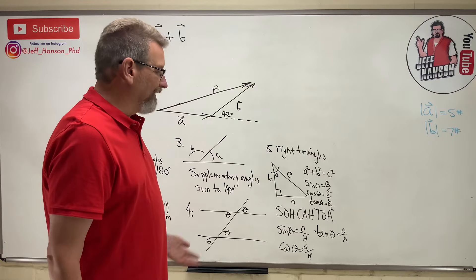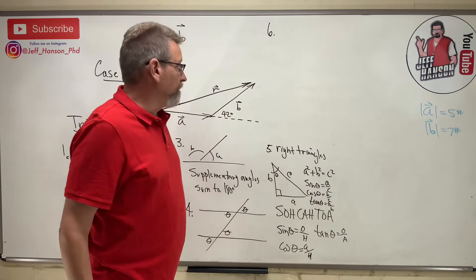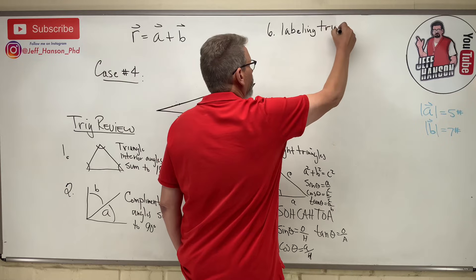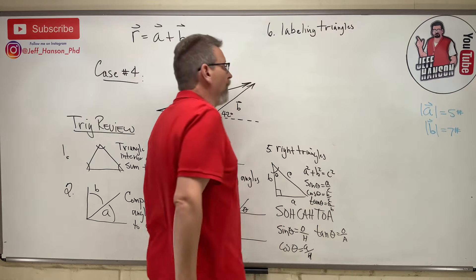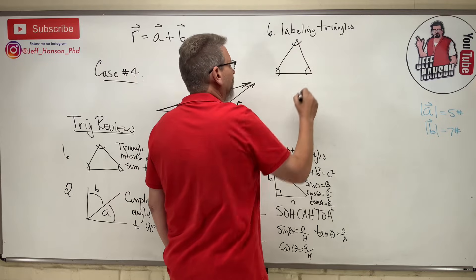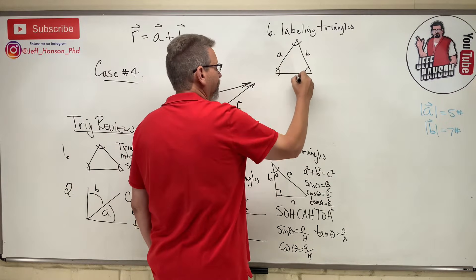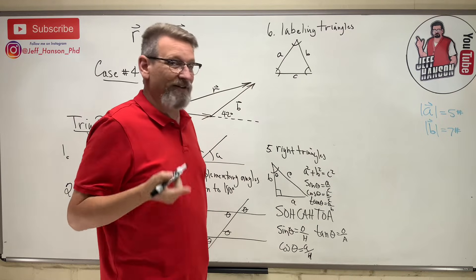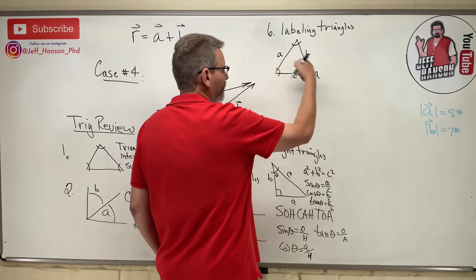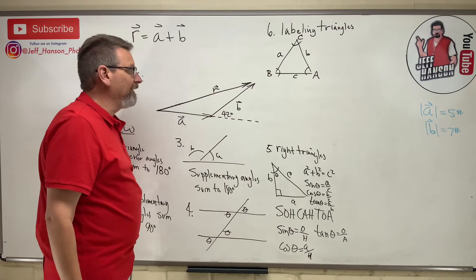Number six: labeling triangles. Sides get lowercase letters and angles get uppercase letters. Side a, b, c — and the angles are opposite the side they belong to. So angle A is opposite side a, angle B is opposite side b, and angle C is opposite side c. That comes in handy for the next rules.